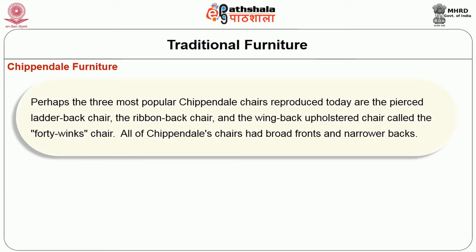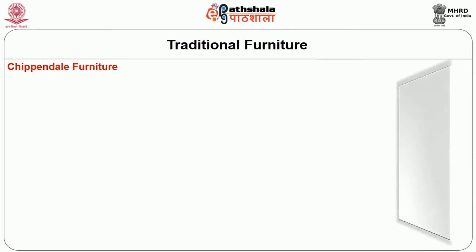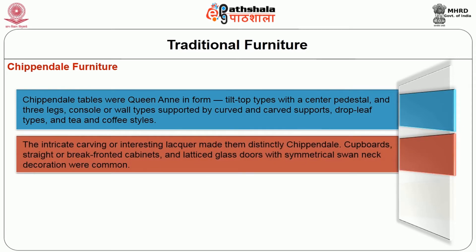All Chippendale chairs had broad fronts and narrow backs. Chippendale sofas and settees were of two styles: the all-wood back combining two or three chair backs, and the upholstered serpentine back with rolled arms, which is popular today. Legs were either cabriole or straight. Upholstery materials included fine leather, needlepoint, tapestry, embroidery, and damask. Chippendale tables were Queen Anne in form — tilt top types with a center pedestal and three legs, console or wall type supported by curved and carved supports, drop leaf types, and tea and coffee styles. Intricate carving or interesting lacquer made them distinctly Chippendale.